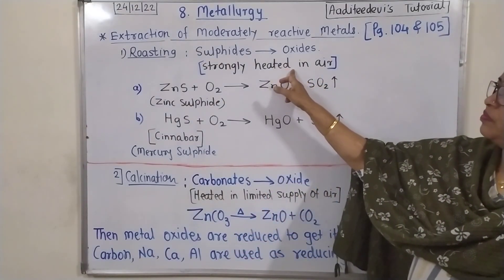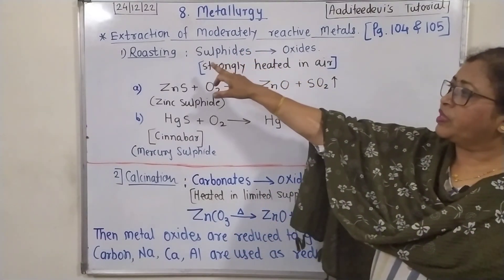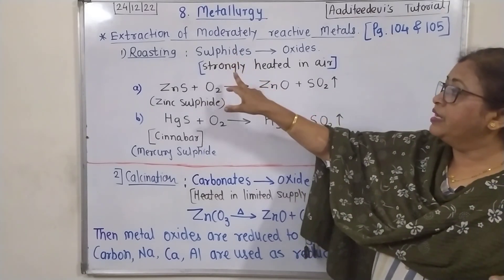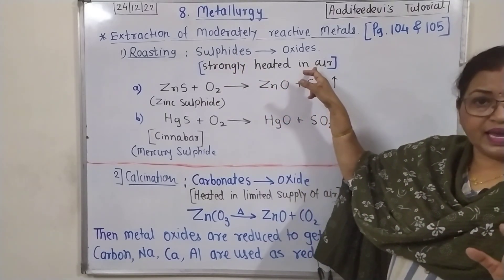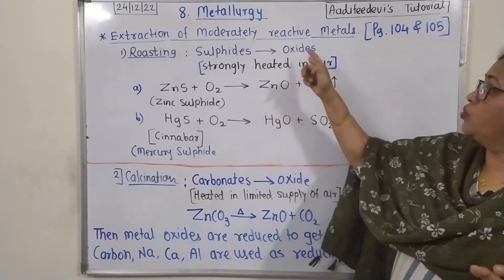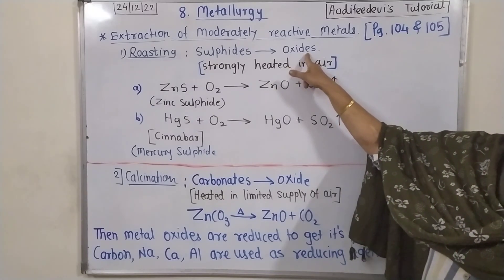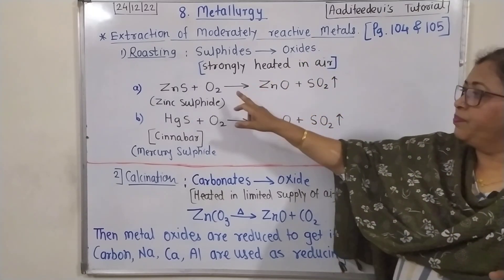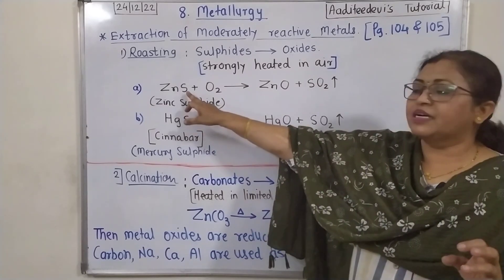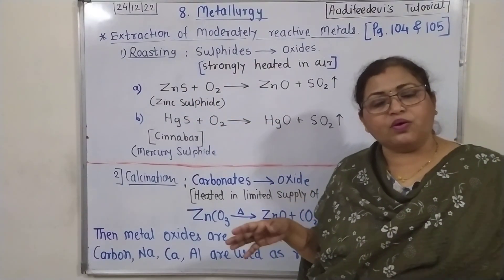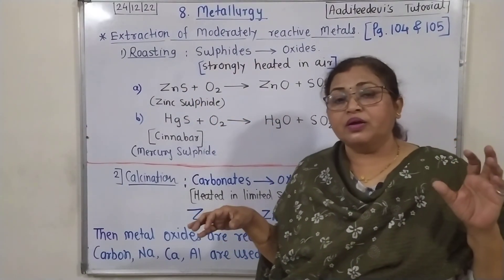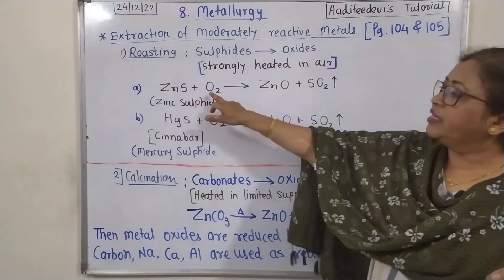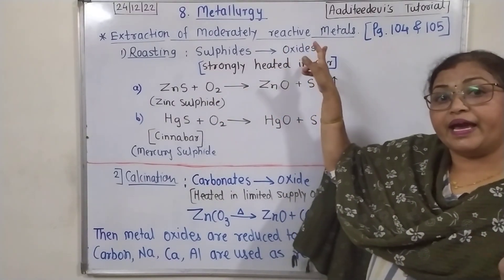As I have written on the board: sulfide ores are strongly heated in air to get their metal oxides. Here I have written two examples. Zinc sulfide, ZnS, is an ore of zinc in the form of a sulfide, and this is strongly heated in air.